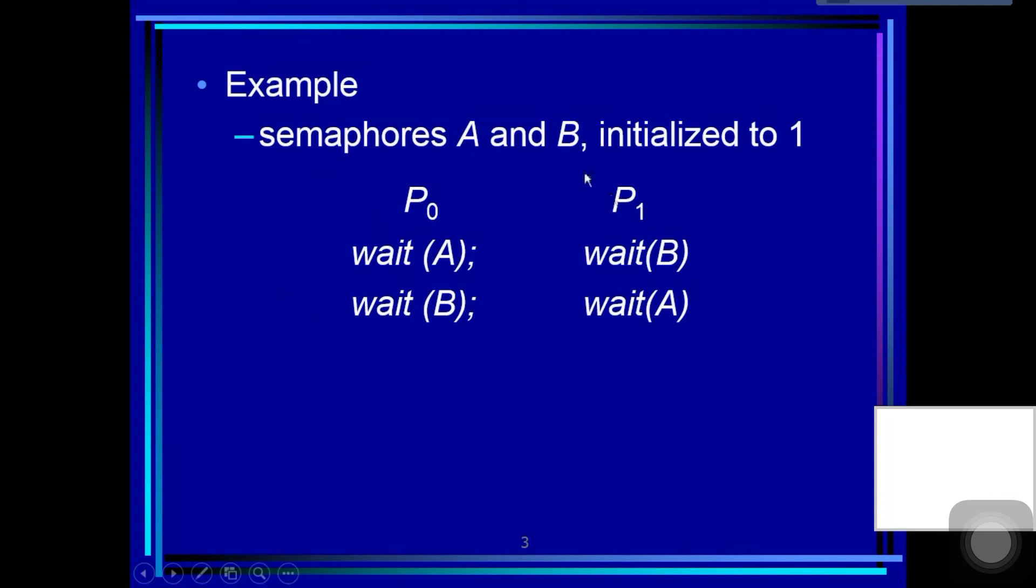Then process P1 executes wait(A). But resource A is already used by P0, so process P1 is also put into the waiting queue for resource A.